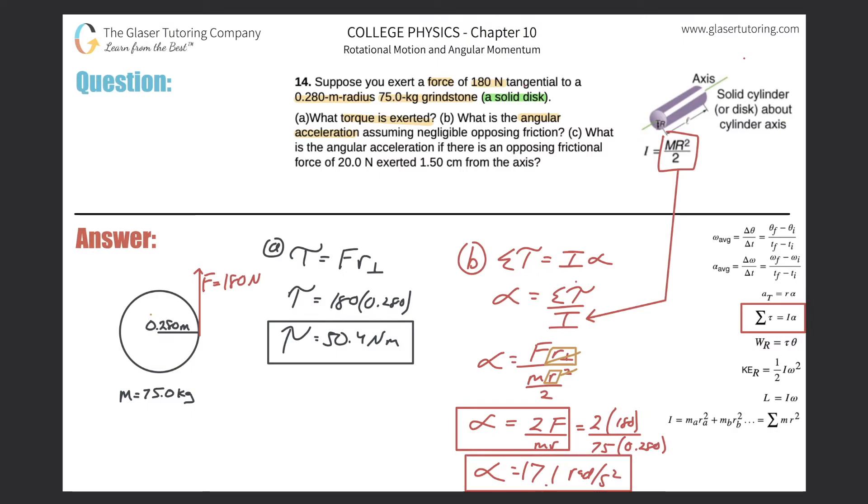And great, all right. So that takes care of letter B. And now for letter C. Let's see, it says, what is the angular acceleration if there is an opposing frictional force of 20 newtons exerted 1.5 centimeters from the axis? So now the only difference in terms of this problem is that the sum of the torques is not just the torque that we found over here. There's now going to be an opposing torque.